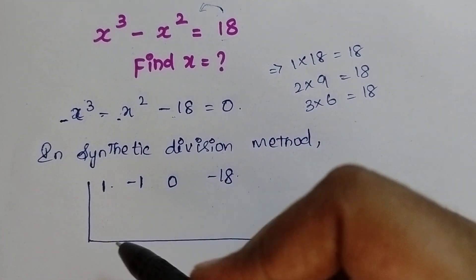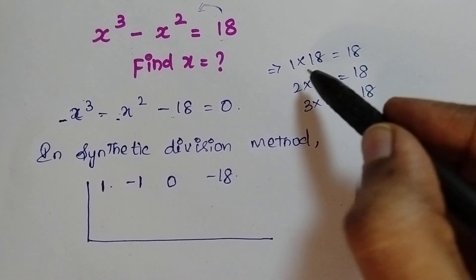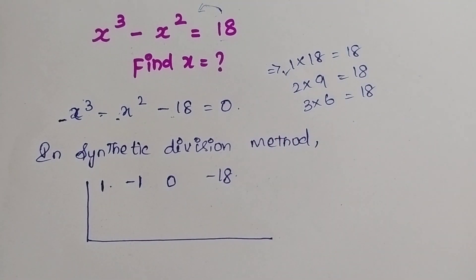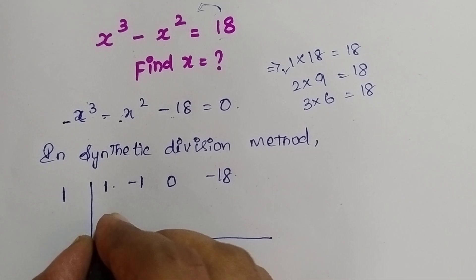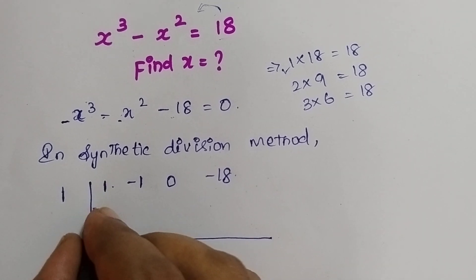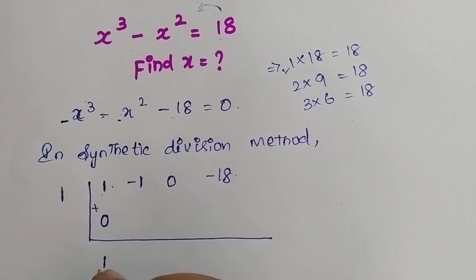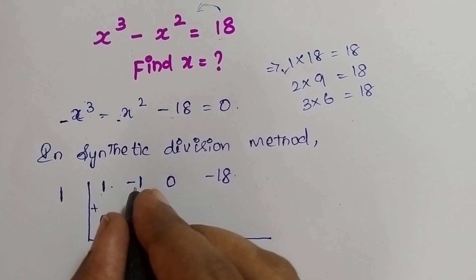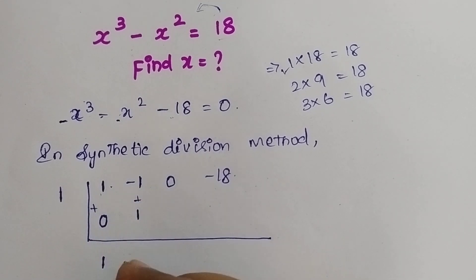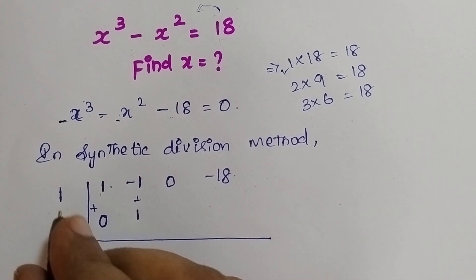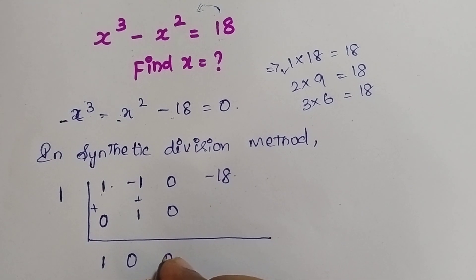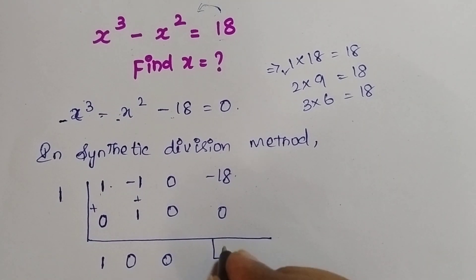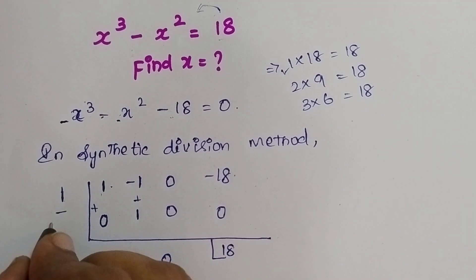First, I am going to take 1. So I write 1, and defaultly write 0 here. If I add these two I get 1. 1 into 1 is 1. If I add these two, minus 1 plus 1 is 0. 1 into 0 is 0. 0 plus 0 is 0. 1 into 0 is 0. So here I will get minus 18. So 1 is not a factor.